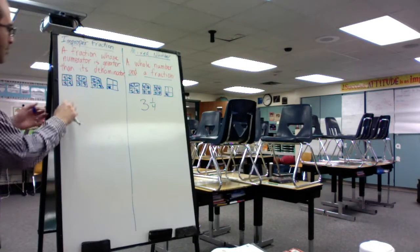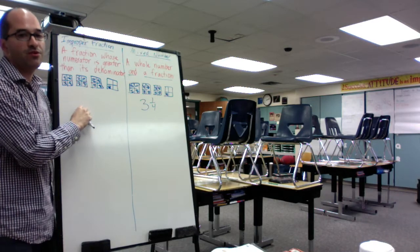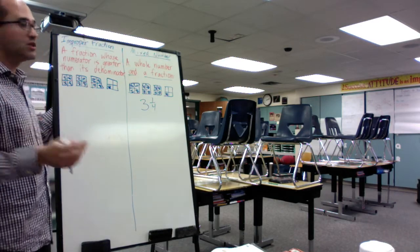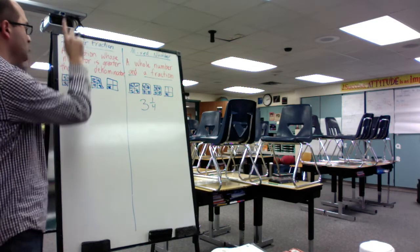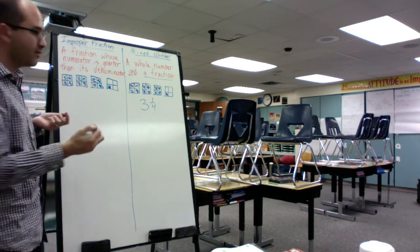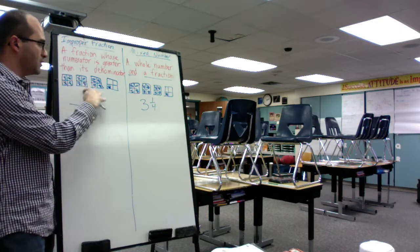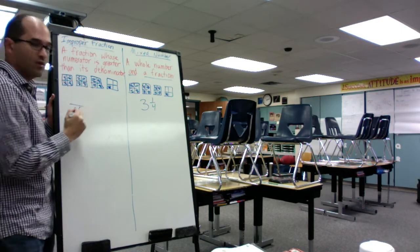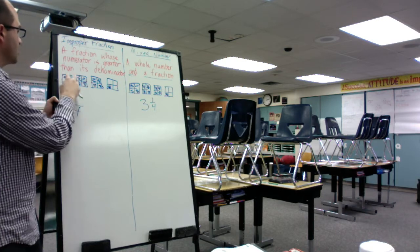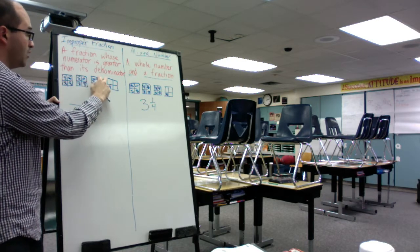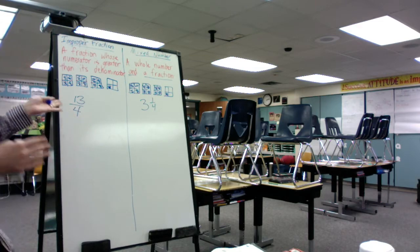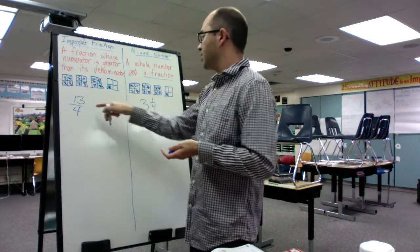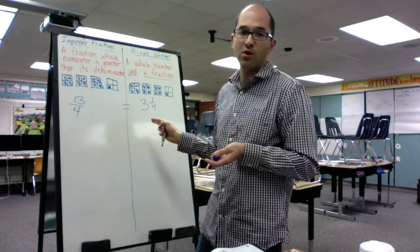You could also write that same exact amount as an improper fraction. An improper fraction is a fraction whose numerator — numerator north, denominator down — whose numerator is greater than its denominator. You know these candy bars are broken into fourths, and altogether there's one, two, three, four, eight, twelve, thirteen-fourths of your candy bars that are left. So we can say thirteen-fourths is equal or equivalent to three and one-fourth.